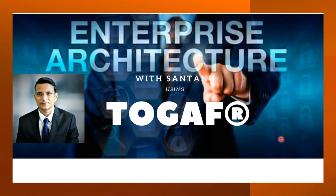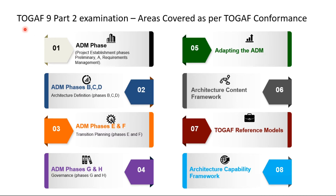This is TOGAF Level 2, the certified exam of TOGAF and the final level. How I have configured this course: first I will tell you about the TOGAF Part 2 examination. The Part 2 examination has been classified into eight different sections. The first section talks about the ADM phases; the second covers B, C, D — business architecture, information architecture, and technology architecture; the third covers E and F, opportunity and solutions, and migration planning; phases G and H cover governance and architecture change management. Adapting the ADM, the architecture content framework, the TOGAF reference model, and architecture capability framework are also key topics.